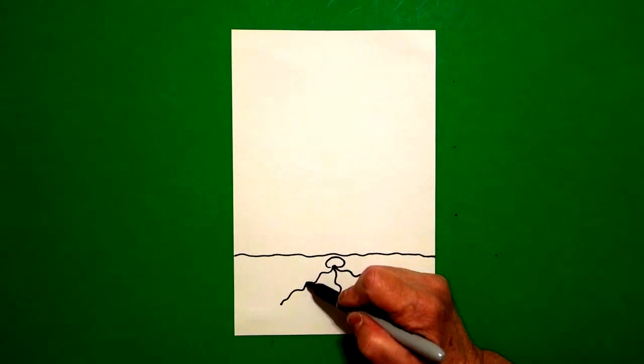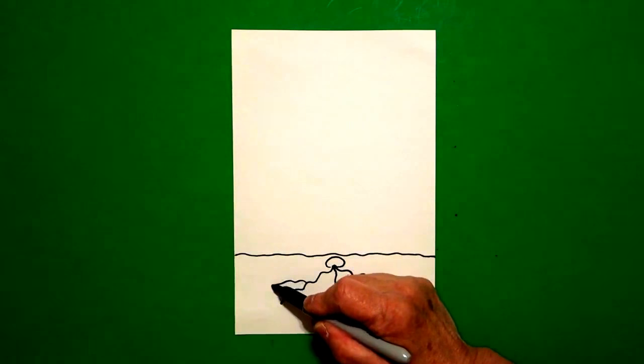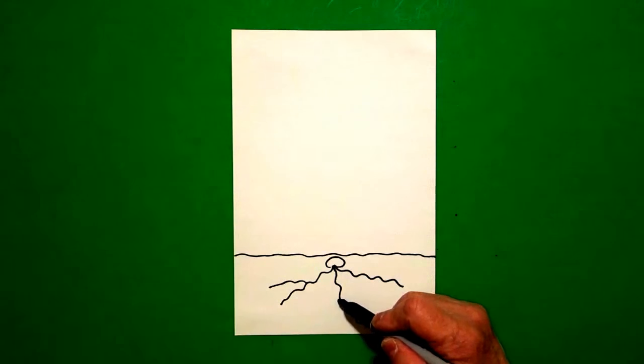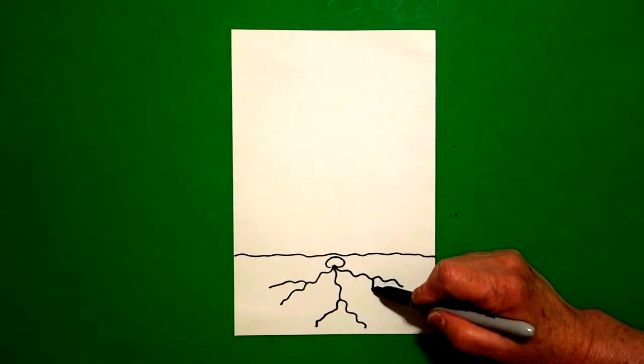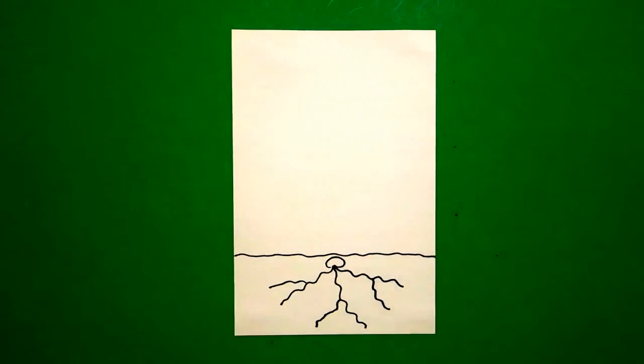Now, I go back to the first one and I draw some wavy lines out, come to the middle, wavy line down, come to the top, wavy line out.